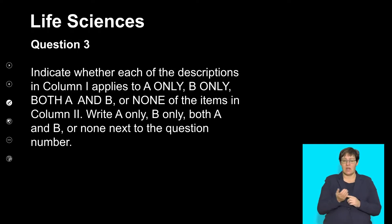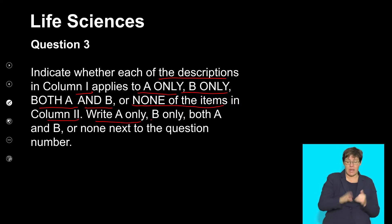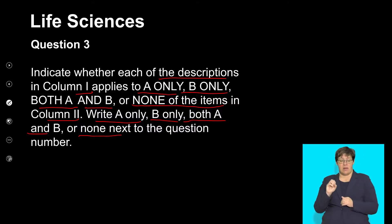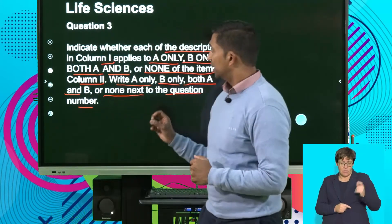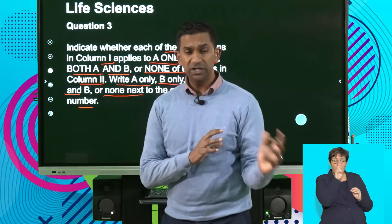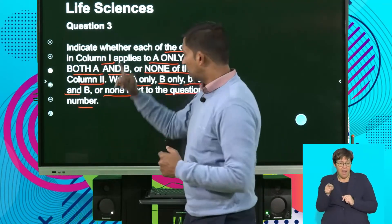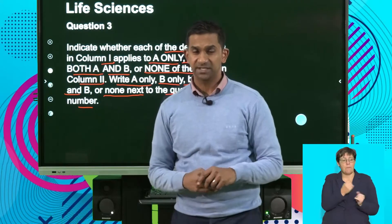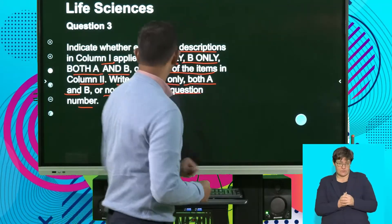Question 3: Indicate whether each description in column 1 applies to A only, B only, both A and B, or none of the items in column 2. Write A only, B only, both A and B, or none next to the question number. These questions are often very confusing because for each response there are four possible answers. This requires you to read through the descriptions, look at the terms, analyse the relevance of each one, and then interpret which of the four options is the most correct combination.